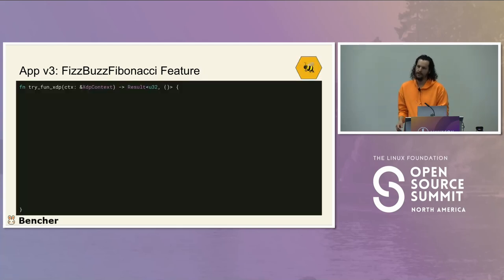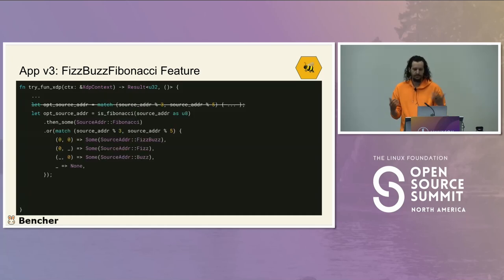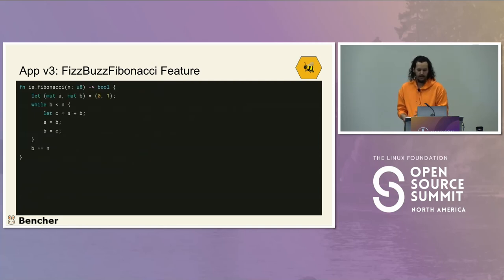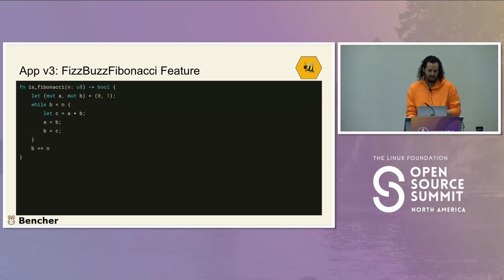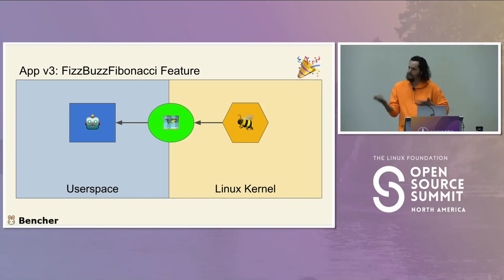On the eBPF side, we update tryFunXDP: instead of just FizzBuzz, we do FizzBuzz Fibonacci. Then otherwise return pass. There's a Fibonacci helper function that computes the sequence. Nothing can go wrong. We just log it on the user space side and everything is great.